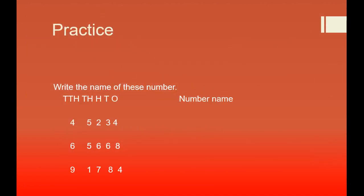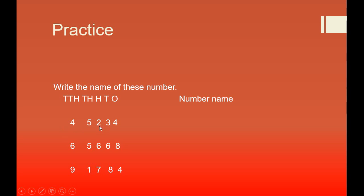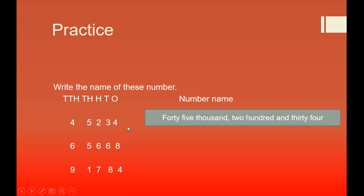We will do some more practice. In the ten-thousands column there is 4, in the thousands column there is 5, in the hundreds column there is 2, in the tens column there is 3, and in the ones column there is 4. So we have to write the number name. First of all we read the ten-thousands and thousands columns together: that is forty-five. So that is forty-five thousand. Then we put a comma, and write two hundred and thirty-four. The number name is forty-five thousand, two hundred and thirty-four.